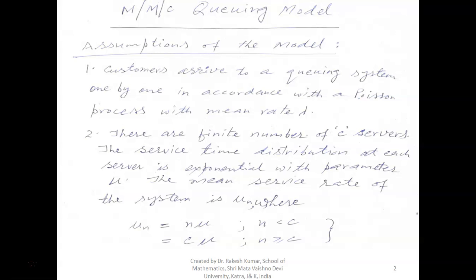There are a finite number of C servers. The service time distribution at each server is exponential with parameter mu. The mean service rate of the total system is mu_n, where mu_n equals n*mu when n is less than c, and equals c*mu when n is greater than or equal to c.